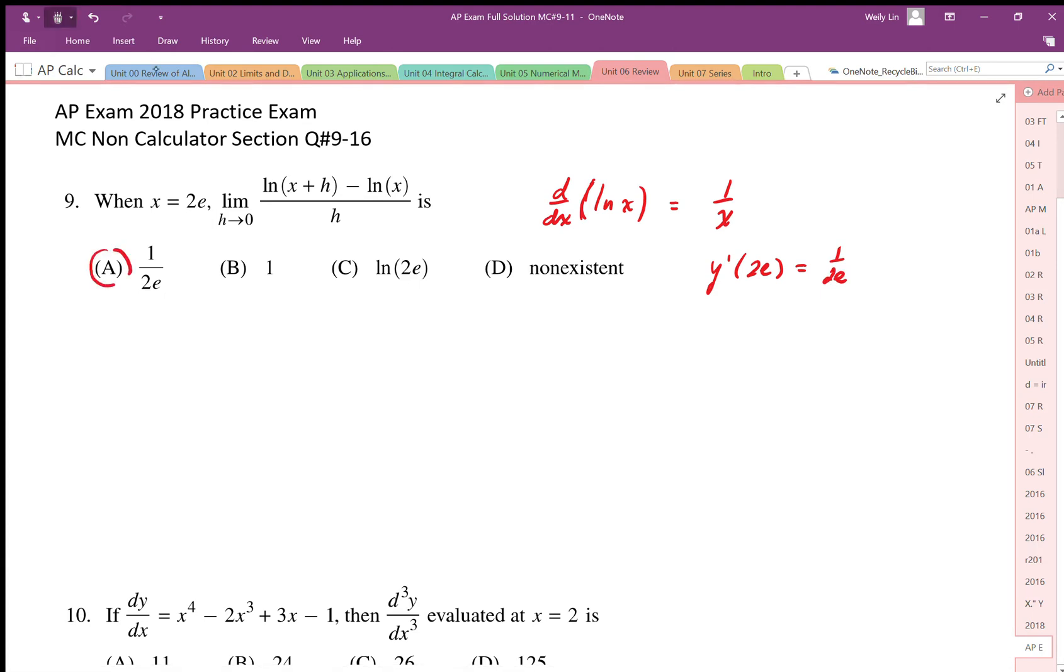Now, if we looked at this and didn't recognize this as Newton's quotient, we could still look at this and say, well, if I substitute 0 in for h and 2e for x, I'm going to end up with the situation where I have the limit as h goes to 0 of this expression is going to be 0 over 0.